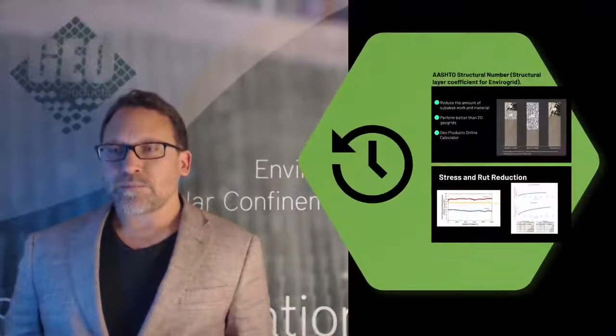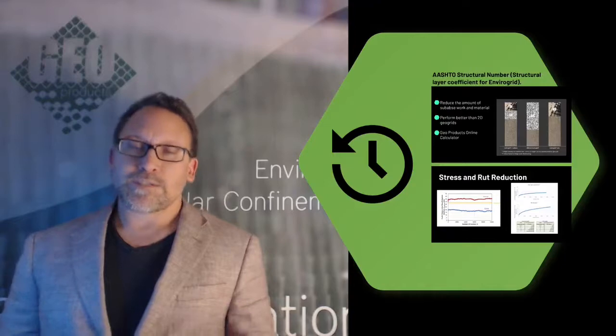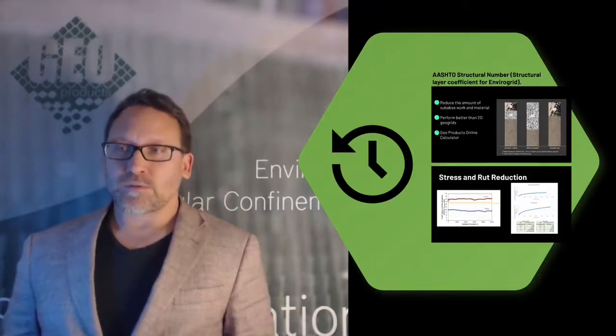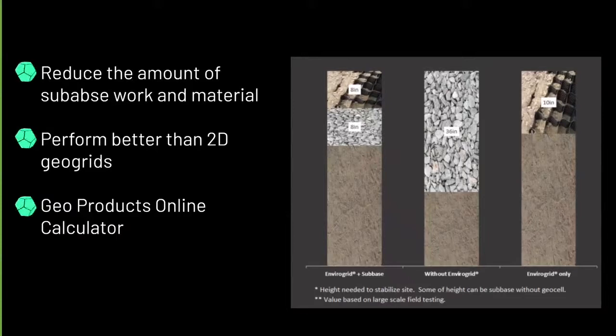Through testing, we found that we can design, and to help designers, we've created a structural coefficient number, a layer coefficient number for EnviroGrid to be able to plug into an AASHTO equation to come up with a design. Each material, if you're not familiar with AASHTO structural layer coefficients, every material has its own number. Sand has a number that's much lower than stone. It's 0.07, whereas stone has a structural coefficient of 0.14, and geocell is going to be much higher than that.